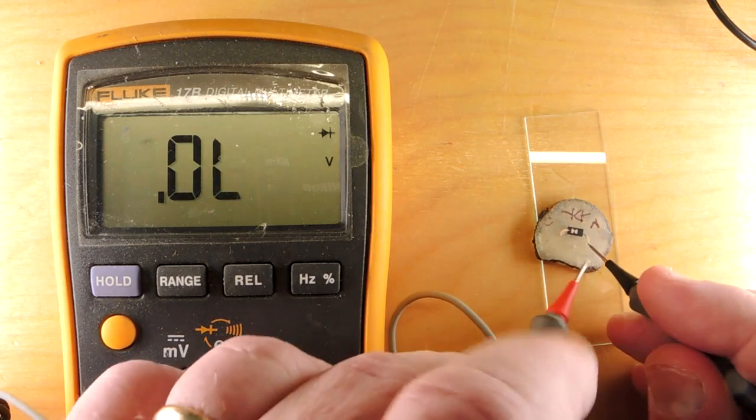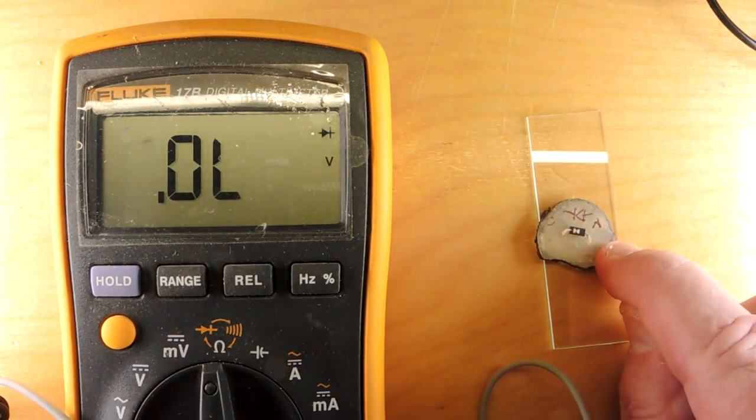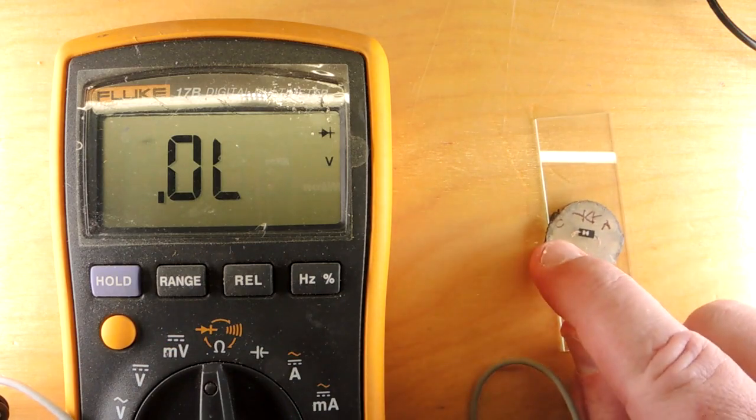If we reverse it, it will act like a diode and stay as an open circuit. So I know this side here is the anode and this side here is the cathode.